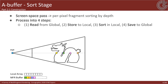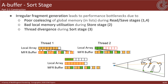After all fragments have been stored to the A-buffer, they are sorted by depth in a subsequent screen-space pass. This process is divided into four main steps: first, depth values of the captured fragments are fetched from global memory; then data is stored onto a per-pixel local structure like a local array; third, the local data is sorted based on depth; and finally, the sorted data is written back to global memory. In typical environments fragment generation is not regular, so the sorting process can result in performance bottlenecks due to poor coalescing of global memory.